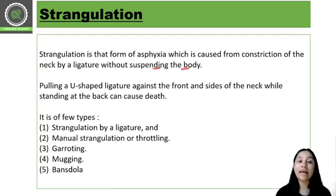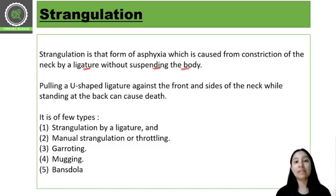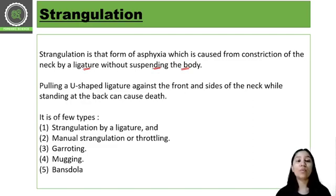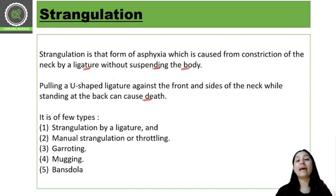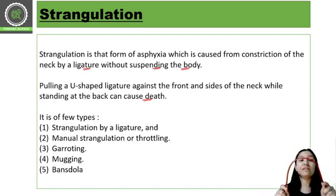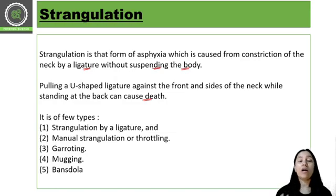In strangulation, if someone is constricting someone's neck with a ligature, that is ligature strangulation. Pulling a U-shape ligature against the front and side of the neck while standing at the back causes death. For example, using a charging cable to trap someone from behind and applying pressure — the U-shape or C-shape ligature mark is present on the victim's neck.